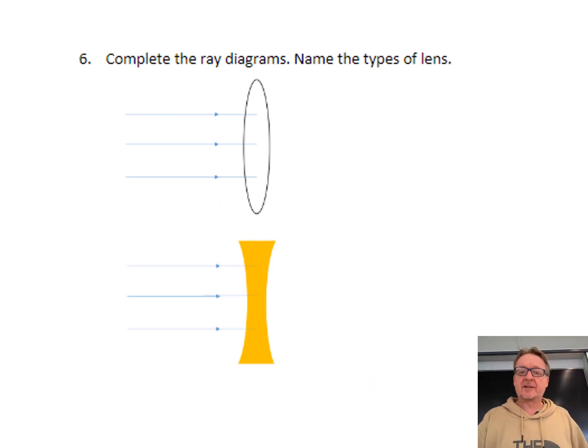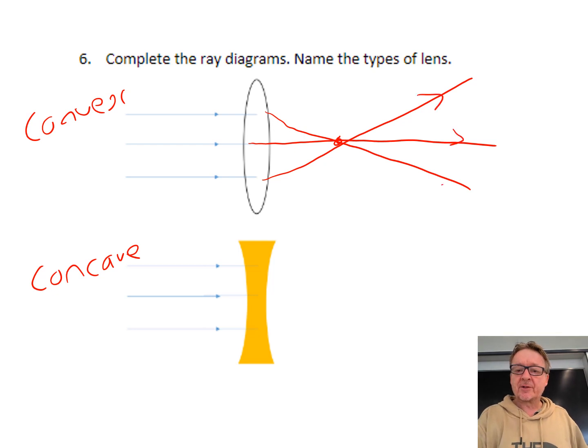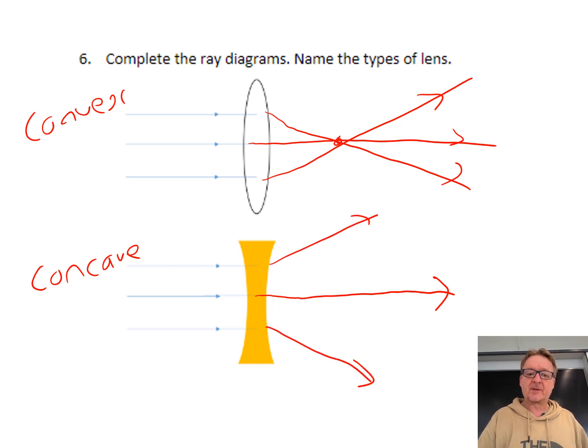Question number six. Complete the ray diagrams and name the type of lens. So this is a concave lens, and this is a convex lens. What happens with this is that light goes right through to the middle. There's a focal point there. It goes through there and through there. This one here, concave, one beam of light goes through there like that. But this time, it spreads out. Remember, concave means it goes in. Convex doesn't.